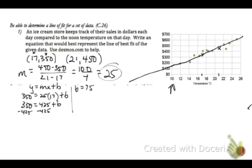So 350 minus 425 will be our y-intercept, and that is a negative 75. So now we know our slope and our y-intercept, so we can write the equation of the line. So y, or the money that the ice cream shop brings in, is 25x minus 75.